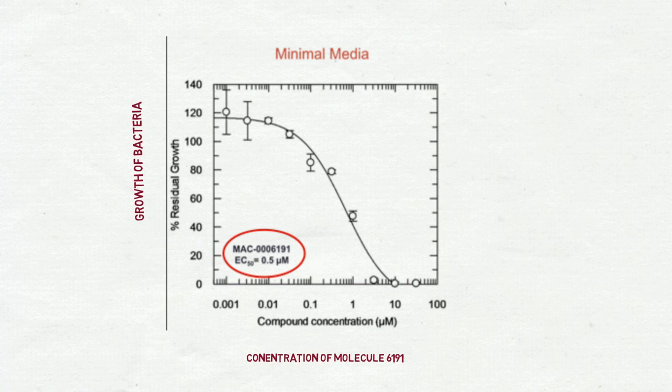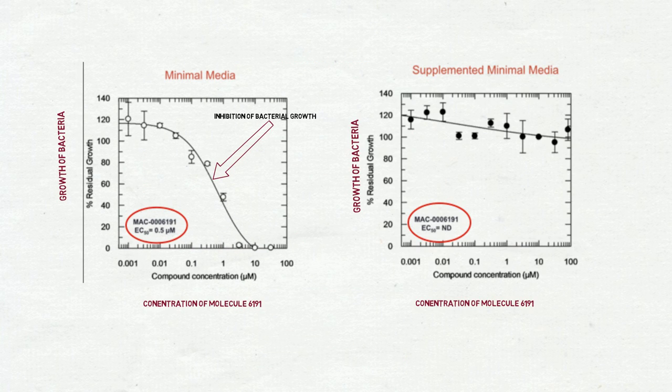These graphs show the growth of the bacteria on the y-axis and the concentration of molecule 6191 on the x-axis. As you can see, bacterial growth was inhibited in the minimal media or the nutrient-limiting petri dish but not in the supplemented or nutrient-rich petri dish.